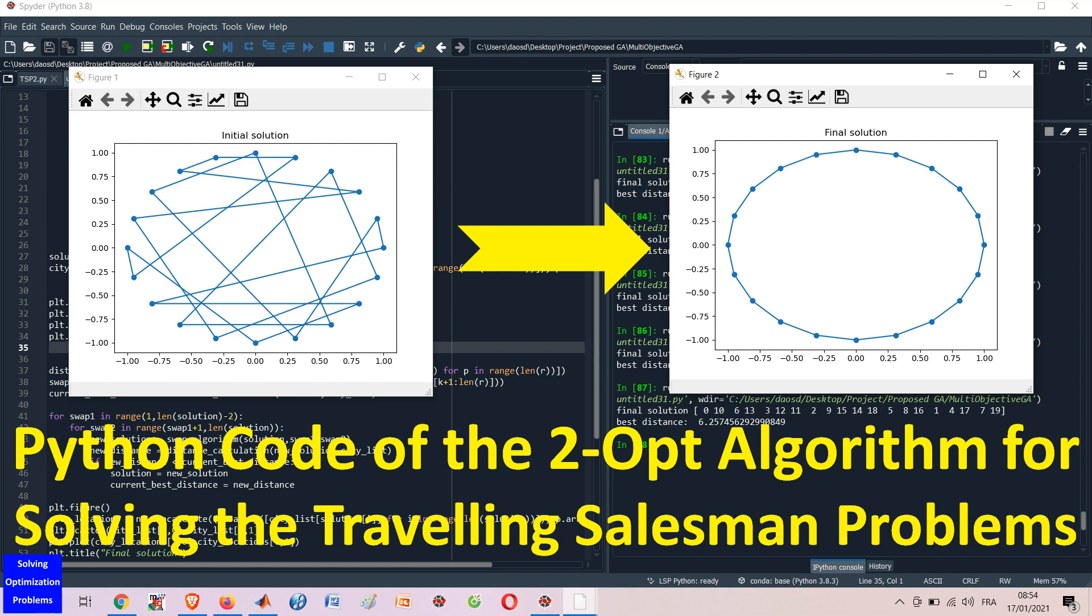The 2-opt algorithm is quite simple but very effective for solving TSP. It is very simple to modify this Python code to solve new TSP instances.